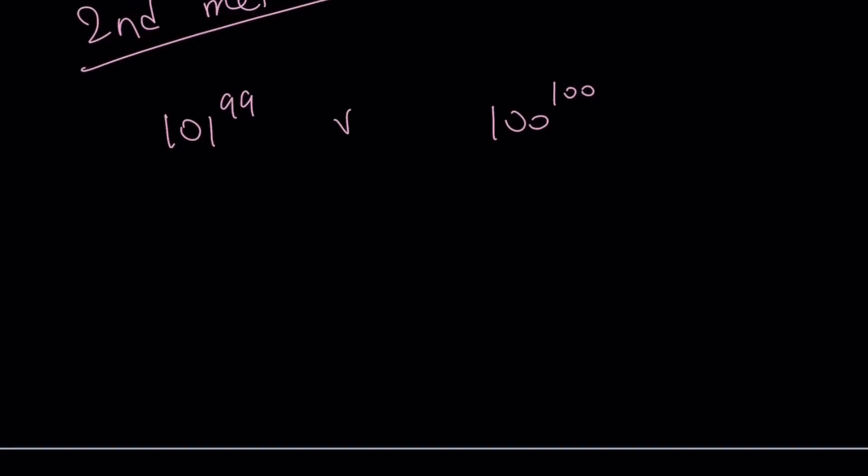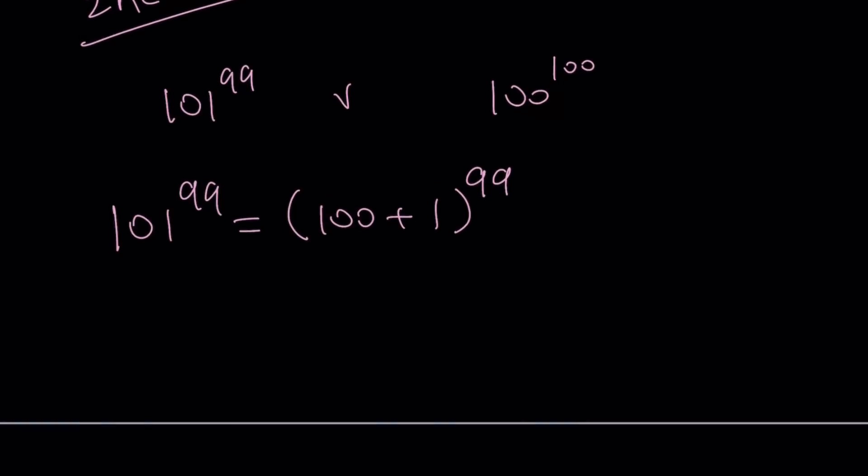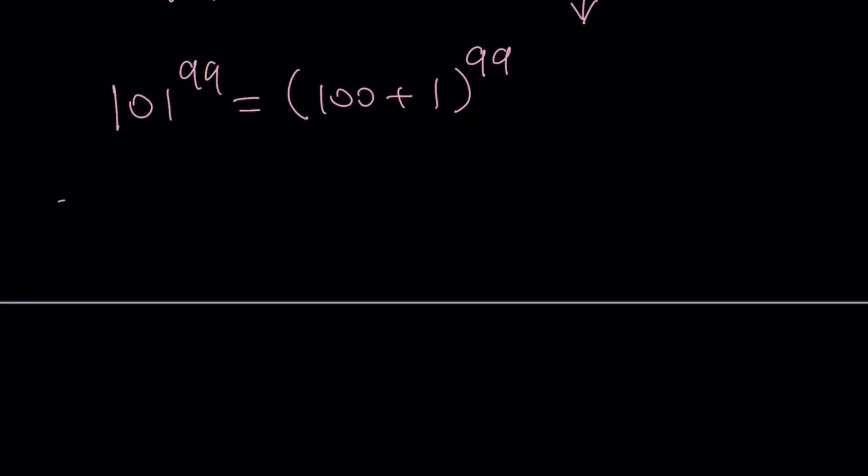I'm going to compare 101 to the 99 versus 100 to the power of 100. It's not like comparing 101 to the 99 and 99 to the 101. That's a different story. That's when we have the base and the exponent interchange. This is different. I'm going to start with this number and use, guess what? The binomial theorem. A lot of times when we're comparing exponential numbers, we use binomial theorem. Let's go ahead and work it out. And then we're going to put the conclusion here at the end.